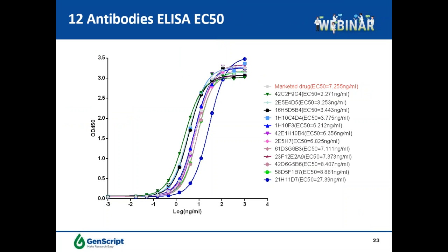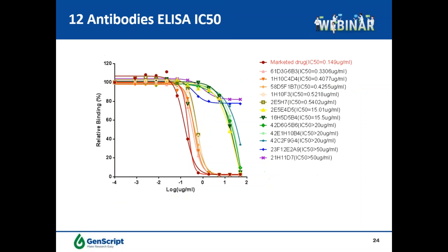This slide shows the ELISA EC50 evaluating the binding activity of 12 antibodies using the marketed drug as a reference. Many good binders were obtained with comparable or even better binding activity compared with the reference marketed drug.